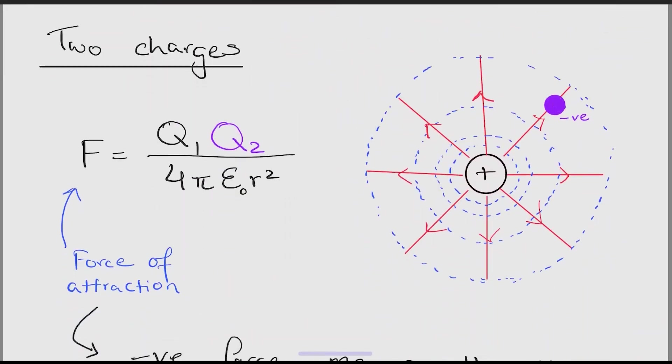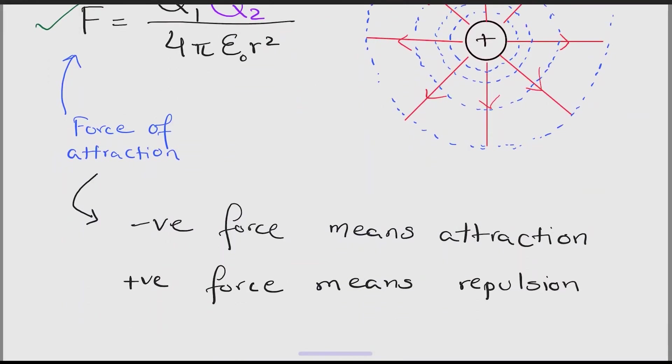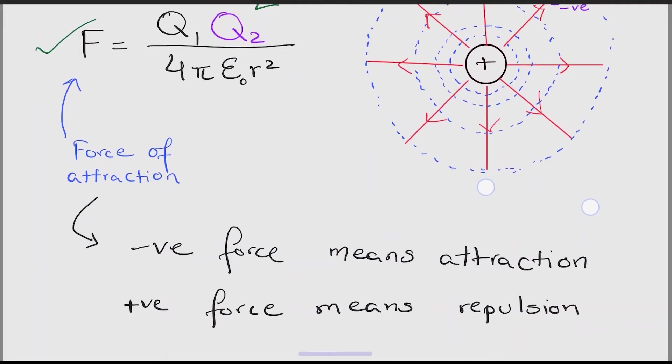Moving on. What if we have two different charged particles? This is the formula for that. Q1 and Q2 are the charges of those particles. Make sure to maintain the negative sign for the negative particles. Moving on, if the force has a negative answer this means attraction. If the force has a positive answer it means repulsion.